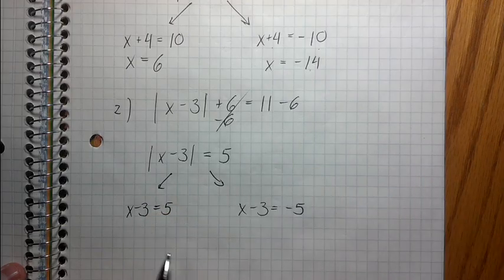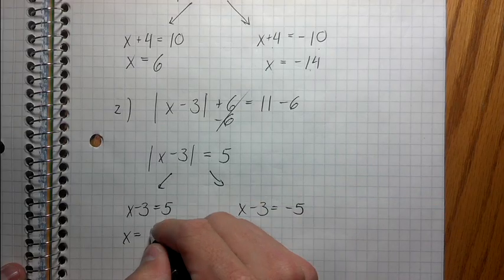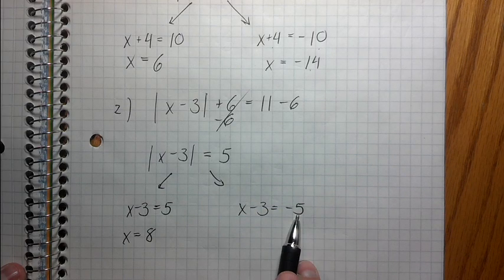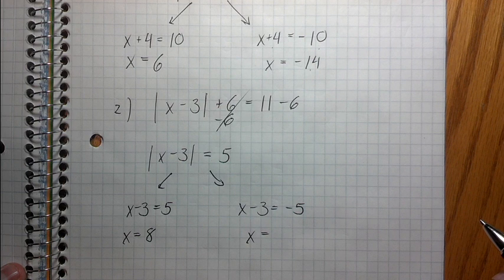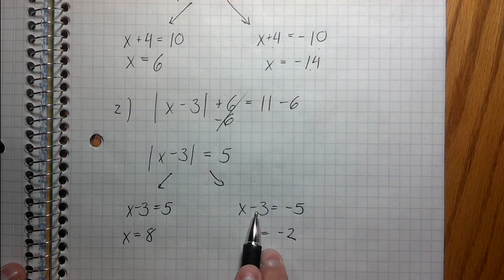So anyways, solve this. Basically, I'm just going to add three to both sides, right? So x in this case equals eight and then x in this case equals negative two. Because negative five plus three is negative two. Cool.